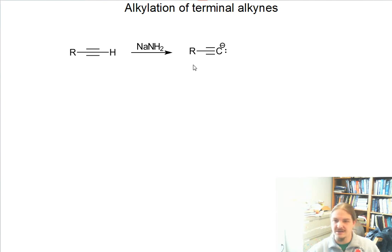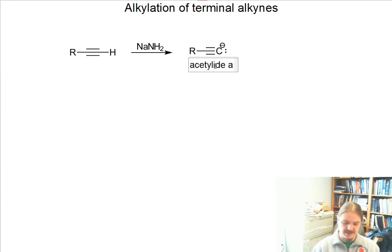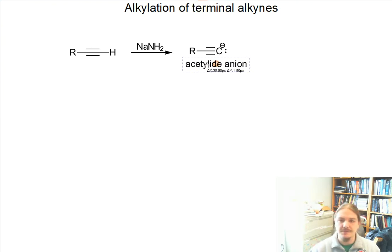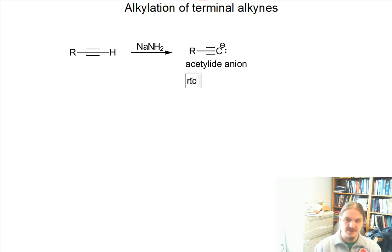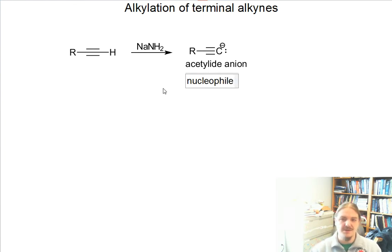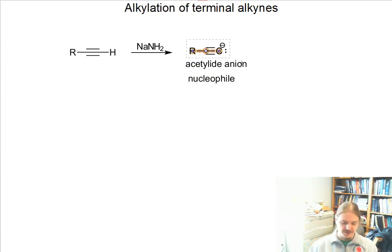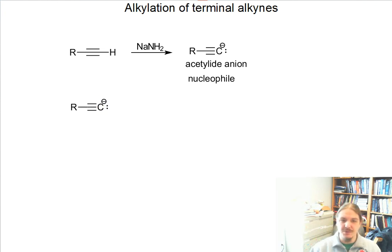I've got an acetylide anion drawn right here. This thing is an acetylide anion. Now, because of that negative charge on that carbon atom, acetylide anions are also very good nucleophiles. This acetylide anion can do a lot of the things that we're used to seeing nucleophiles do. And at this point, when you think of nucleophiles, you think of nucleophilic substitution.